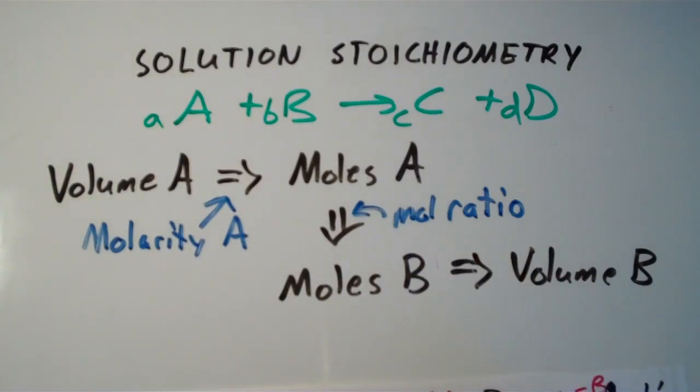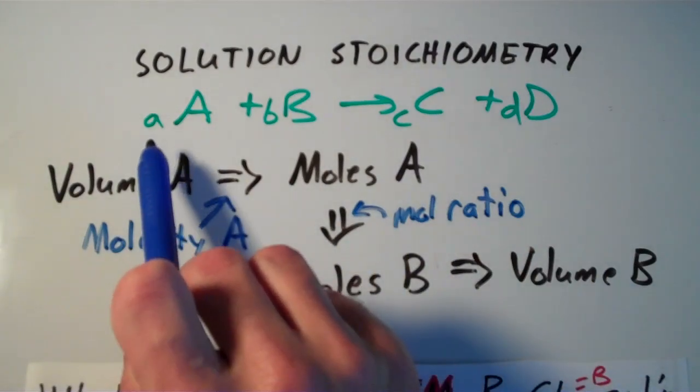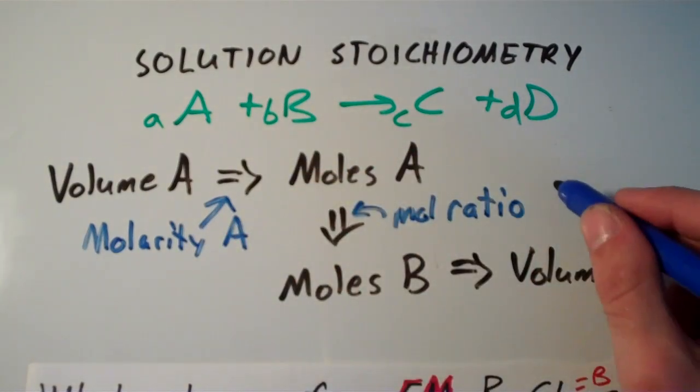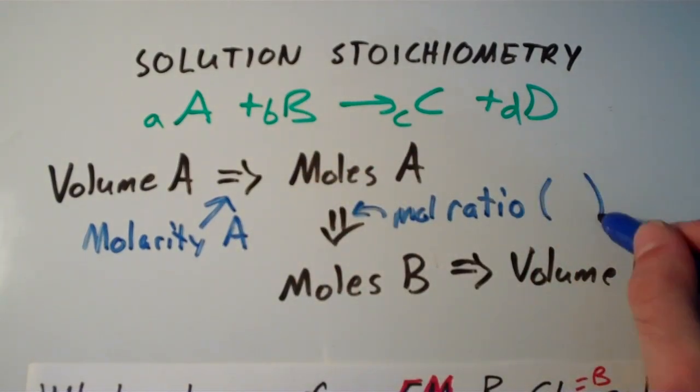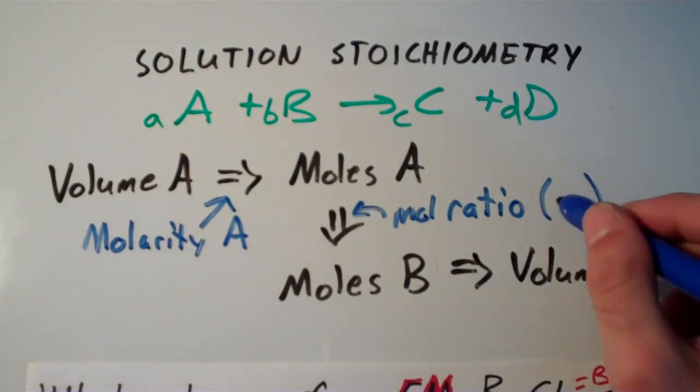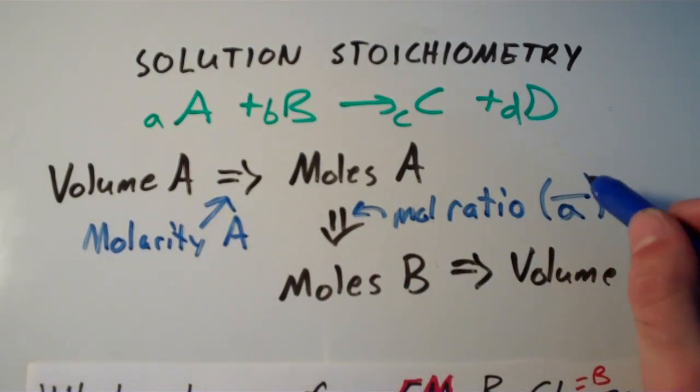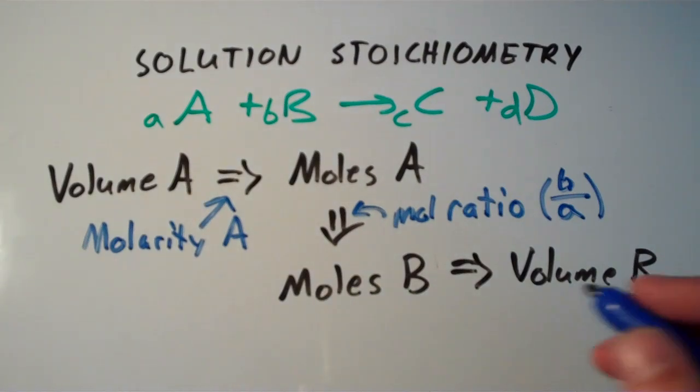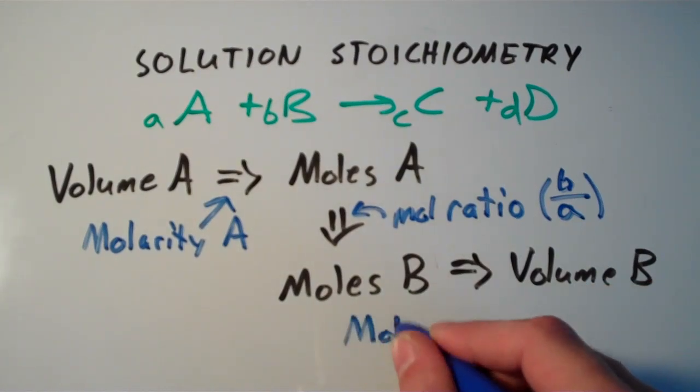So in this equation, to get the mole ratio, I would have the coefficient in front of A and the coefficient in front of B. So little a and little b. So for instance, if I was converting away from A to B, I would divide by A and multiply by B. And now that we have the moles of B, we can convert that into the volume of B, of course, using the molarity of B.